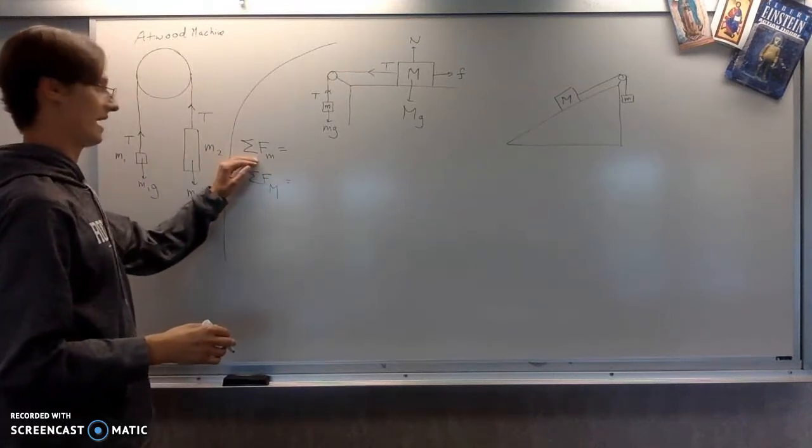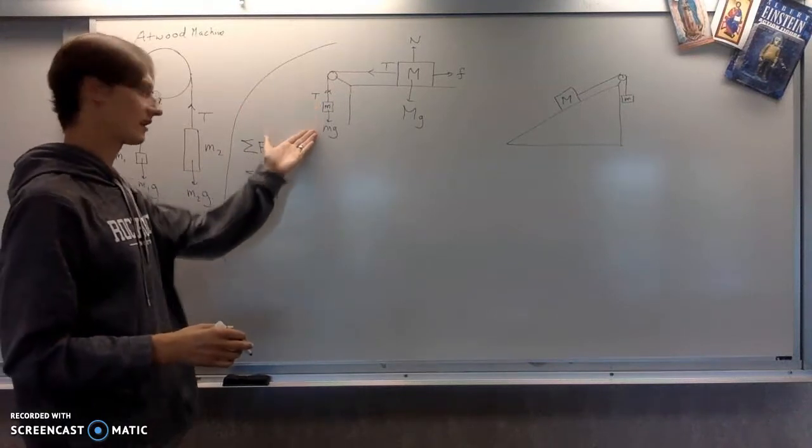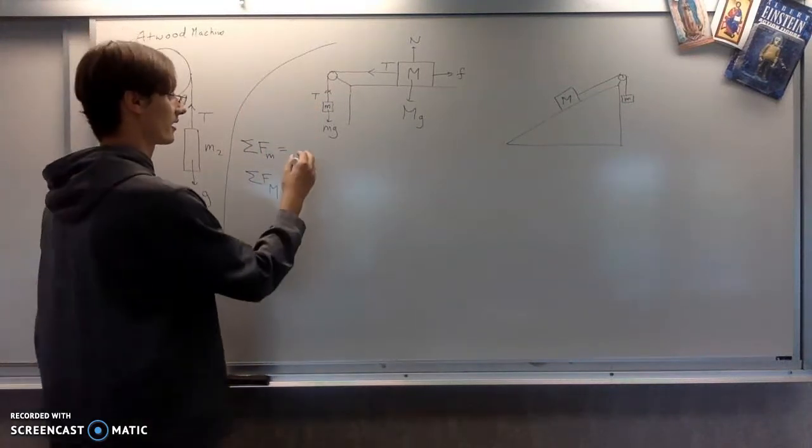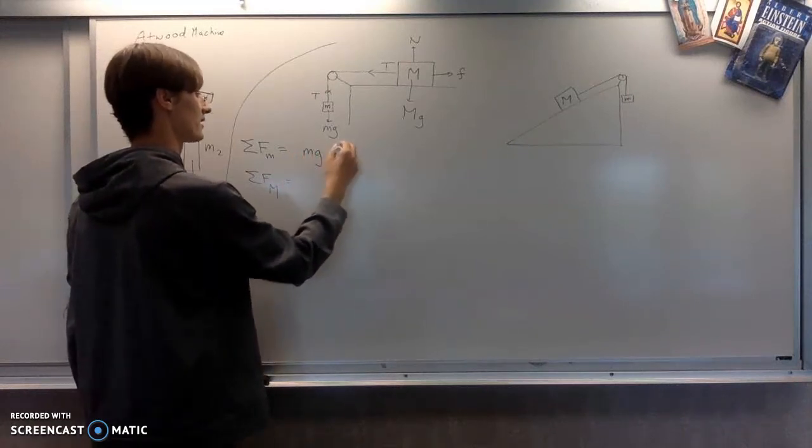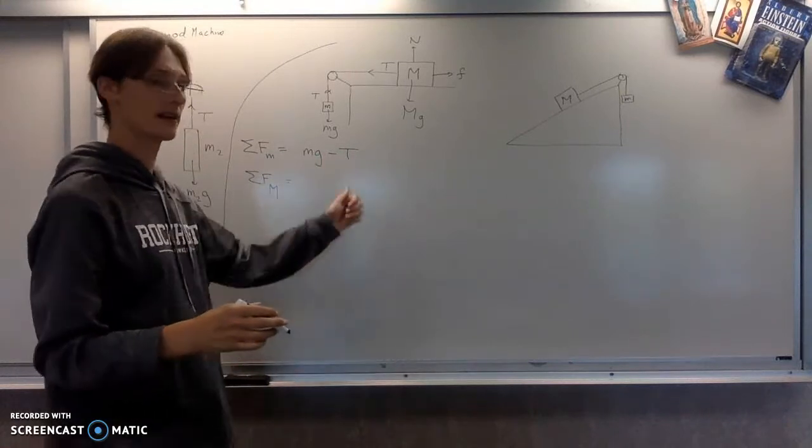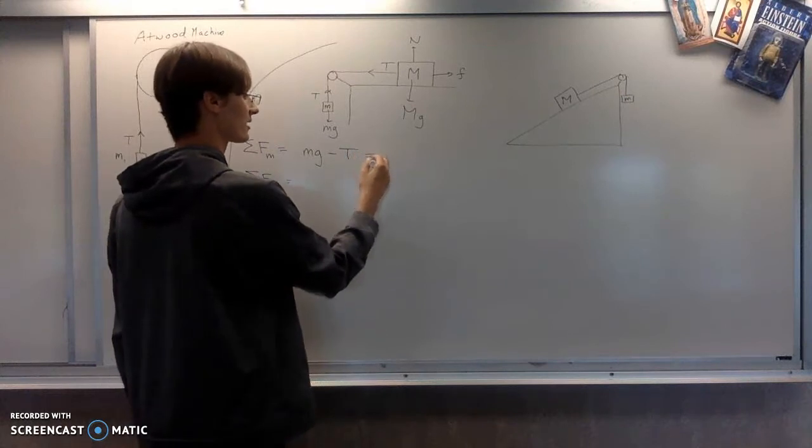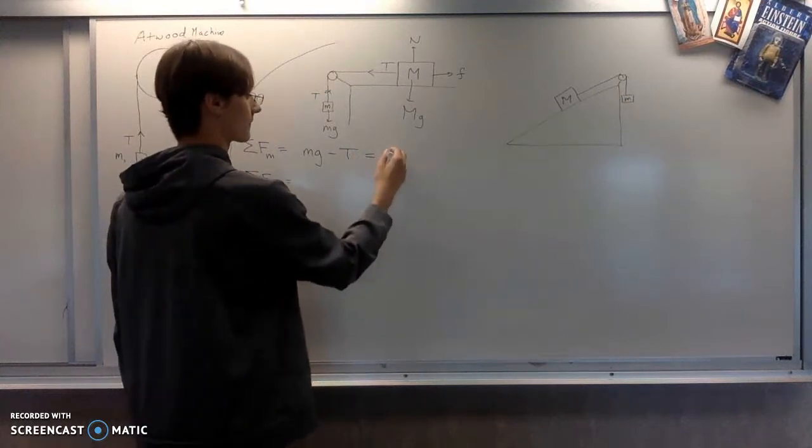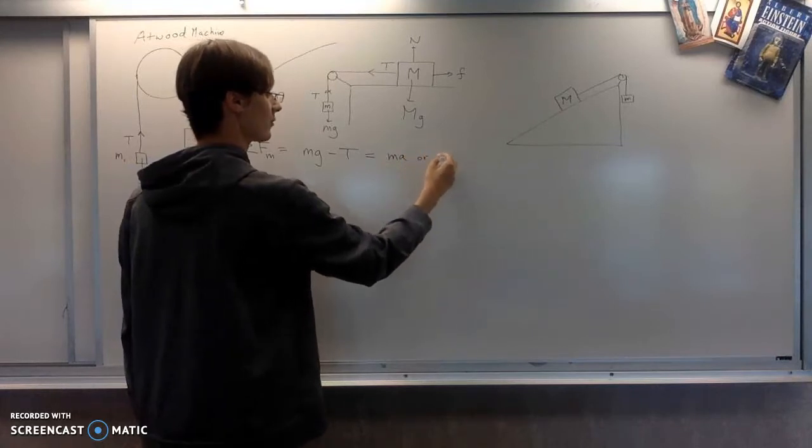For the little mass, assuming that it is accelerating downwards, then our equation would look like Mg minus T. In that order, because the weight must be greater than the tension if it's accelerating downwards, equals ma. Or, let's give the other possibility, maybe it equals zero.